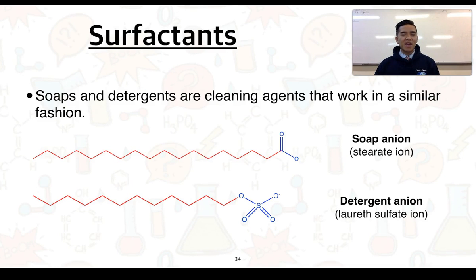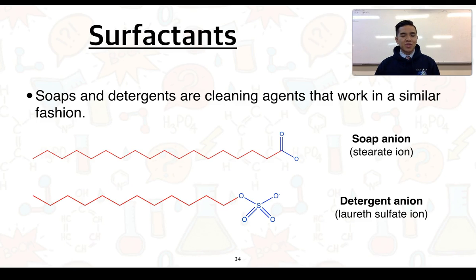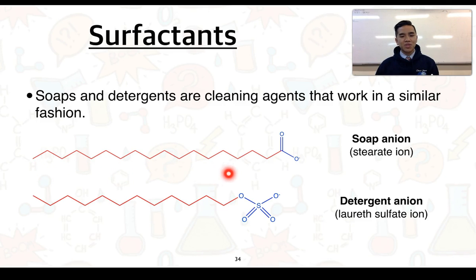Soaps and detergents are other compounds that can facilitate mixing. They are commonly referred to as surfactants — cleaning agents that help remove non-polar fats, oils, and grease from surfaces. Water is a polar solvent and can remove polar stains well, but cannot remove non-polar substances like oil effectively. Soaps and detergents form a bridge between water and these non-polar molecules. Both soaps and detergents have a non-polar hydrocarbon tail made up of only carbons and hydrogens, and an ionic head with a negative charge.